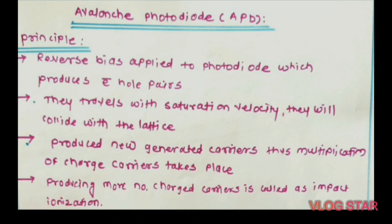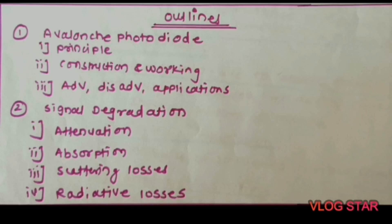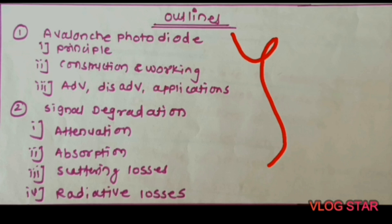Welcome back to the channel. In a previous video we covered conventional PN junction photodiode and PIN photodiode. In today's lecture we are going to study the avalanche photodiode — its principle, construction, working, advantages, disadvantages, and applications. After that, we will cover signal degradation, including attenuation, absorption, scattering losses, and radiative losses. Let us start with the avalanche photodiode.